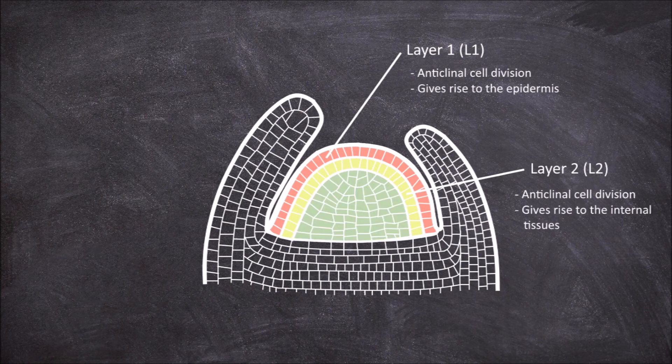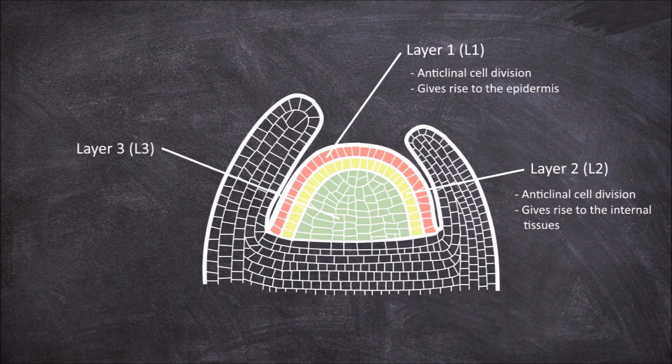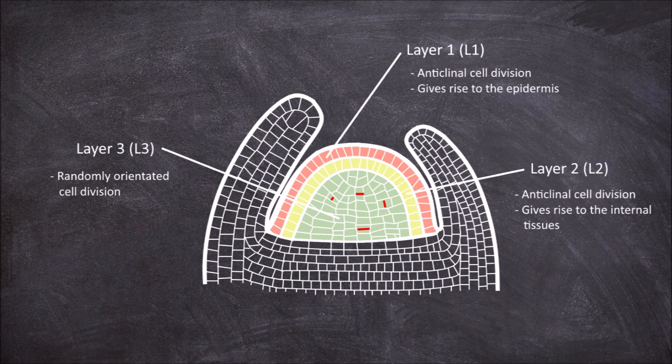The internal layer is layer 3. Cell division in this layer is randomly orientated. Layer 3 like layer 2 also gives rise to internal tissues.